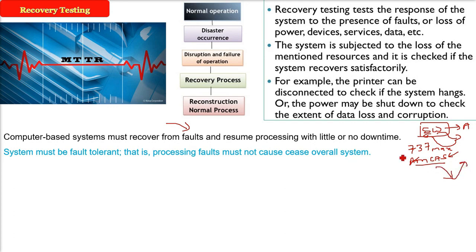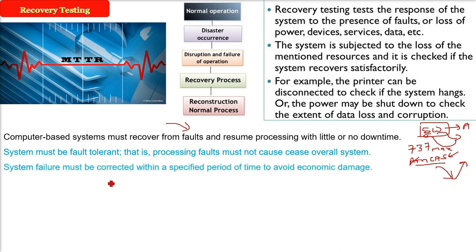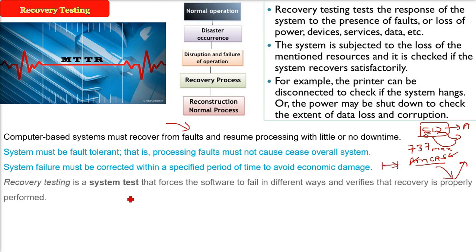Because people's lives matter here. The system failure must be corrected within a specified period of time. Because today software is money-making — it will create immense economic damage to the people who are the owners of the software.